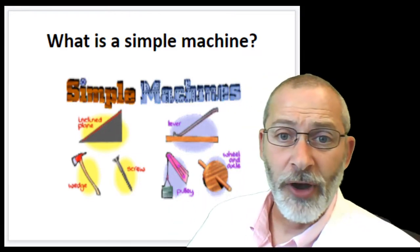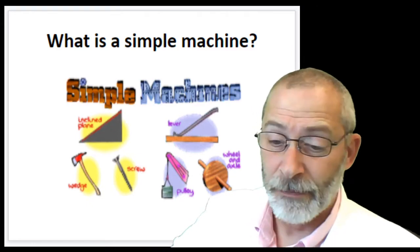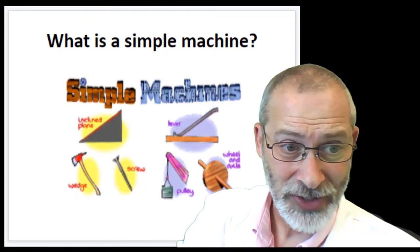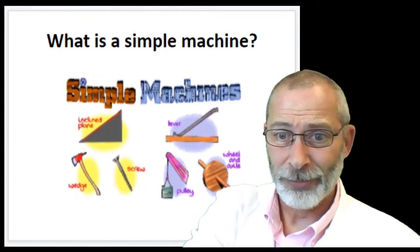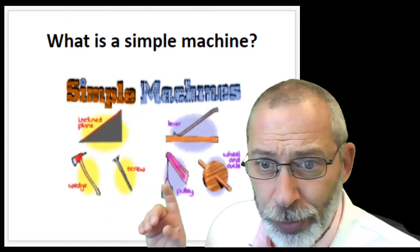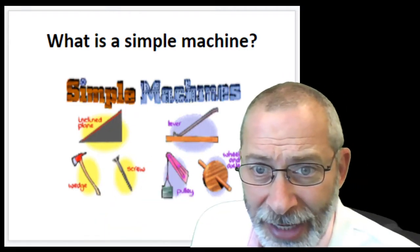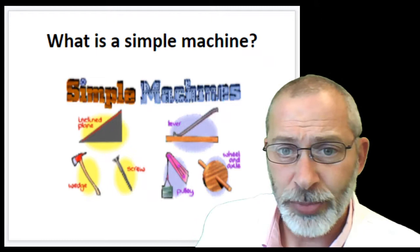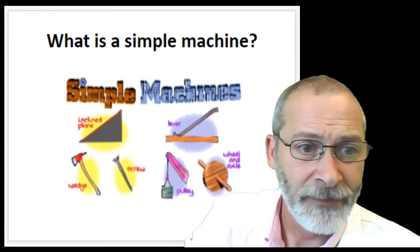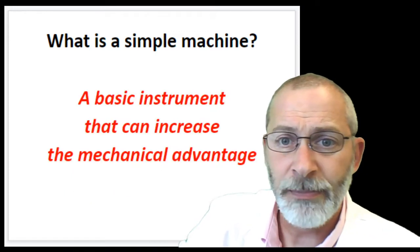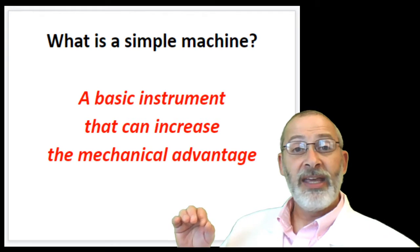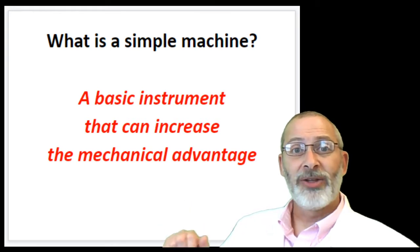So first of all, what is a simple machine? You can see some examples over there behind me: inclined plane, wedge, screw, pulley, wheel and axle, and lever. There are six simple machines we're going to be discussing. By definition, a simple machine is a basic instrument that can increase the mechanical advantage.